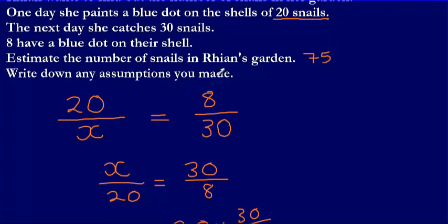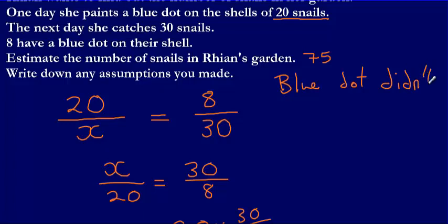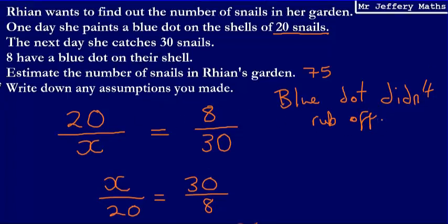The assumptions we've made are the same as before: that the blue dot didn't rub off, that none of the snails died overnight, and that no new snails were born overnight.